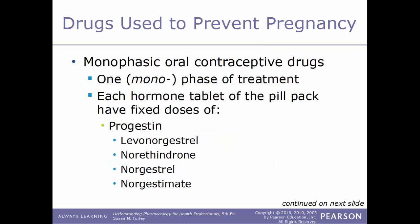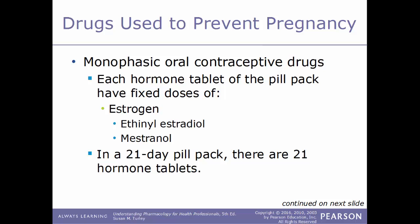The first category is monophasic oral contraceptive drugs. The prefix mono means one, so this is one phase of treatment — each hormone tablet of the pill pack has a fixed dose of progestin and estrogen. Examples of progestins include levonorgestrel, norethindrone, norgestrel, and norgestimate. Examples of estrogens include ethinyl estradiol and mestranol. Each pill has a fixed dose of one member of each of these categories. In the 21-day pill pack there are 21 hormone tablets; in the 28-day pill pack there are 21 hormone tablets and 7 inert sugar tablets.